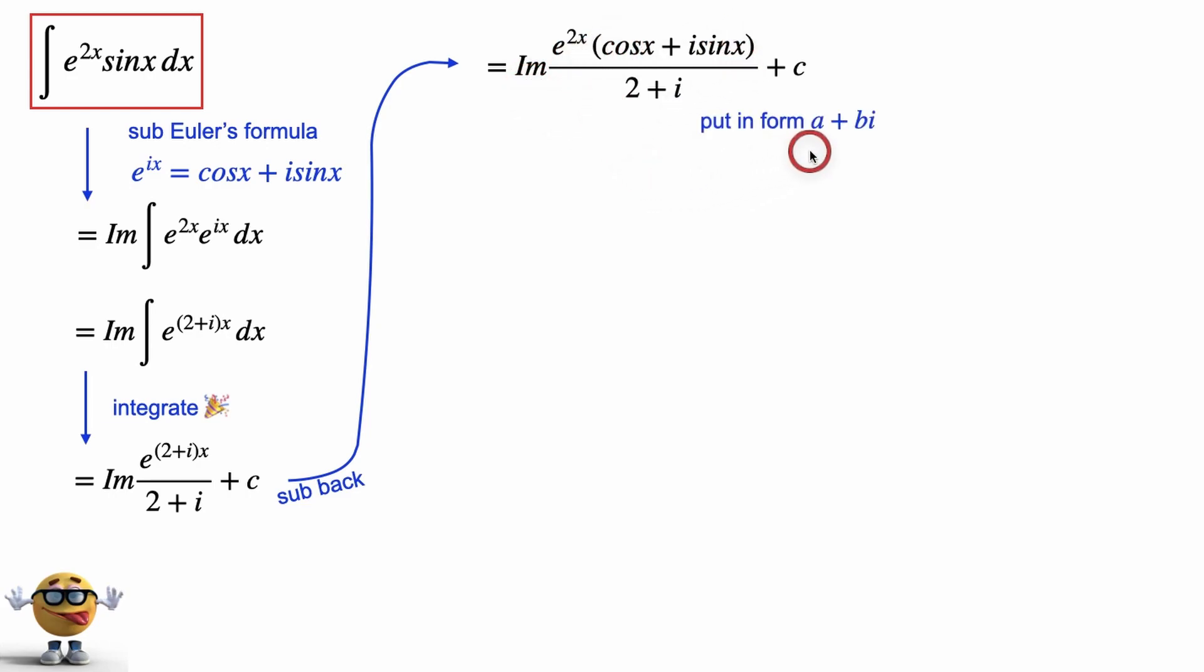To do that, we need to put it in the form of a plus bi, where b is our imaginary part right here. To get our fraction into this form, we multiply the top and bottom by the conjugate.